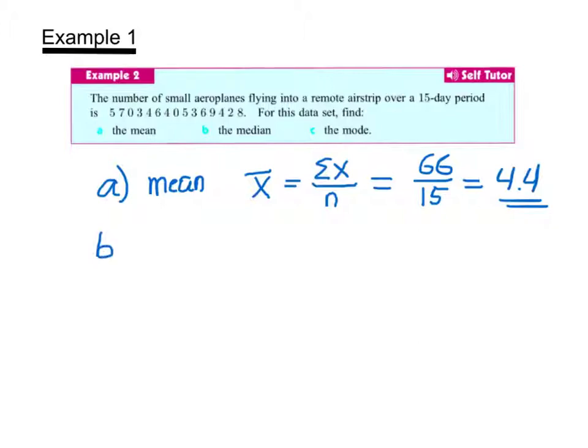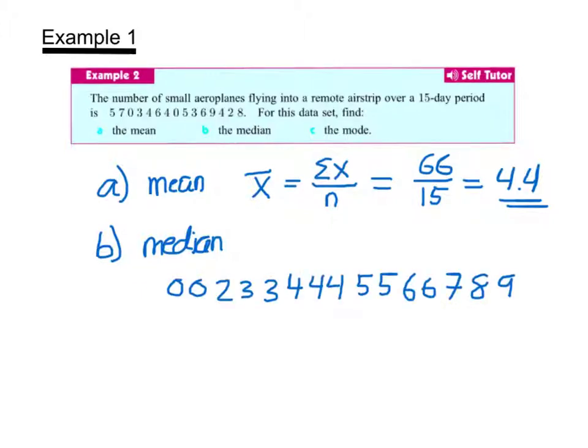The next measure of center is the median. In order to find the median, I need to order the data set, which means I'm going to put them in order from least to greatest. This is the ordered data set. So I have 15 data values. I add 1 to 15 and divide by 2, which is 8, so I need the 8th data value.